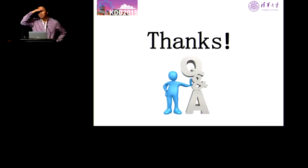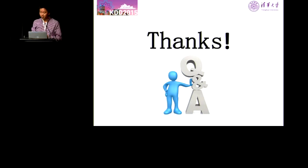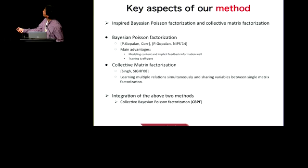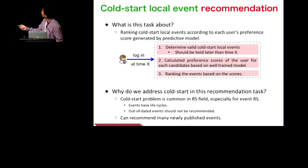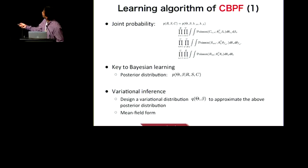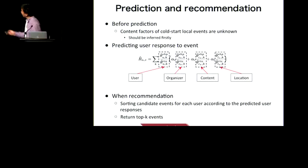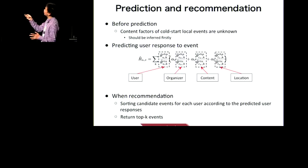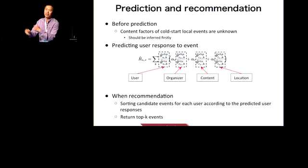Hello. It's a very interesting work. Can you talk more about how you infer the user, organizer, and location information? Okay. The user factor is learned in the training stage. The organizer factor is also learned in the training stage, and it is similar to the location vector. But for the content vector, it is inferred in the prediction stage, because we can't observe the content of a real cold-start event.